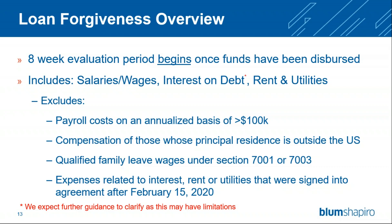What is included in your loan forgiveness? Salaries and wages, interest on debt — both mortgage and anything secured by personal property — rent and utilities. What does it exclude? Payroll costs on an annualized basis greater than $100,000, compensation to those with principal residence outside the U.S., any qualified family leave wages, and any expenses related to interest, rent, or utilities signed into agreement after February 15th, 2020.